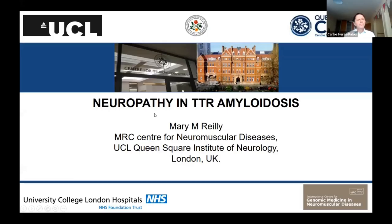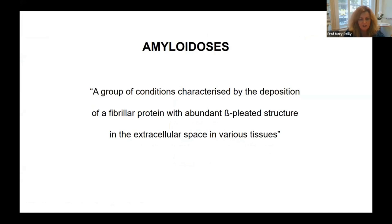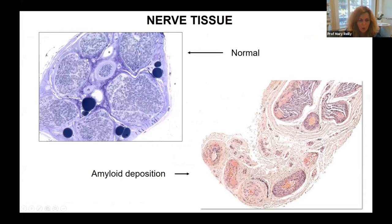Neuropathy in TTR amyloidosis is an important topic. TTR amyloidosis is one of a group of conditions called the amyloidoses. It's a difficult term to understand, but it's where you have a protein deposited where it shouldn't be, and the protein is insoluble. So if you look at a normal nerve here, you have the normal nerve fascicles. But if you look at this nerve, all of this pink stuff is actually amyloid — it's a protein that cannot be dissolved.